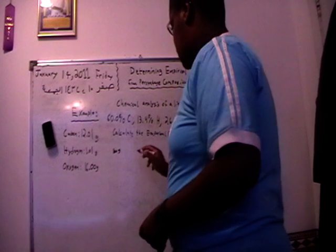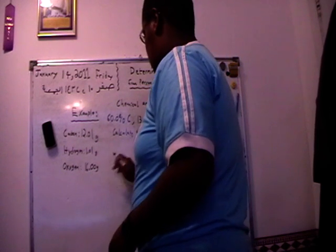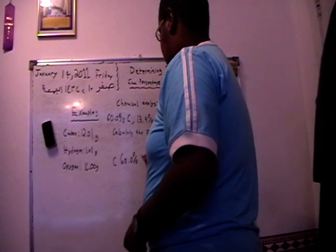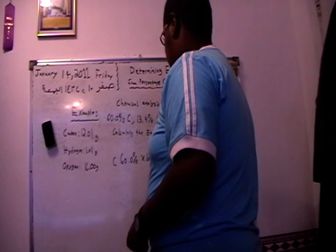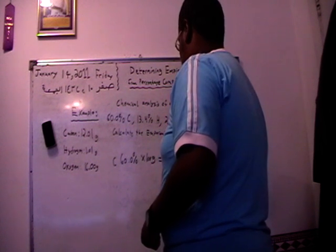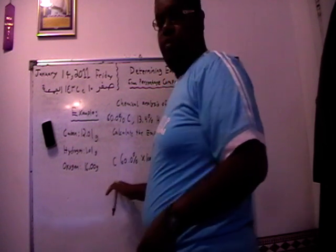First of all, carbon, which is 60.0% times 100 grams equals 60.0 grams of carbon. That's for carbon.